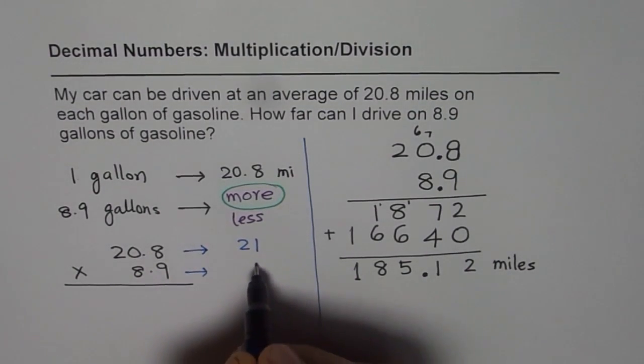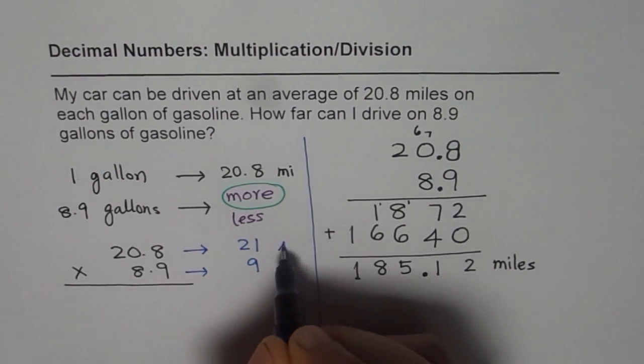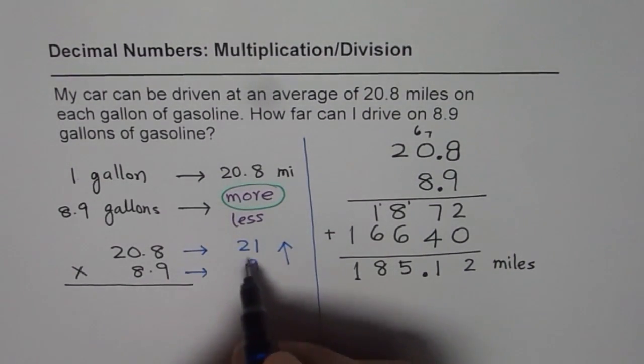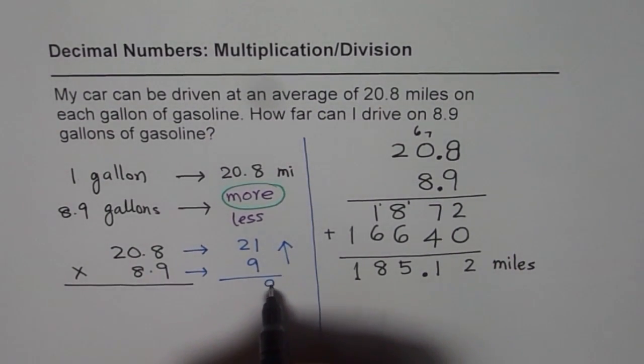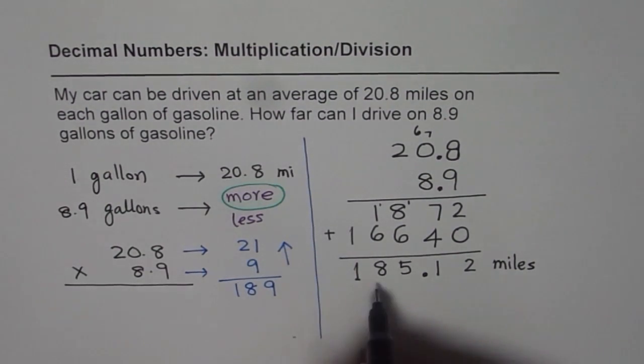And 8.9 is 9. We have rounded up both of them. So this answer should be higher than this. Remember that part. 9 times 1 is 9. 9 times 2 is 18, so 189. 189 is higher. This is lower. Perfect.